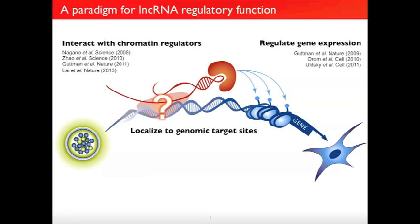Together, these two observations suggest that lncRNAs might actually localize to specific regulatory targets across the genome and perhaps play a direct role in recruiting chromatin regulatory complexes to regulate these sites. And if this were true, lncRNAs might actually represent a critical missing component of our understanding of genome regulation.